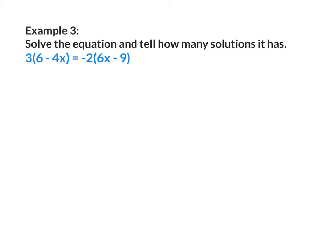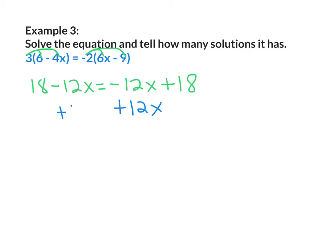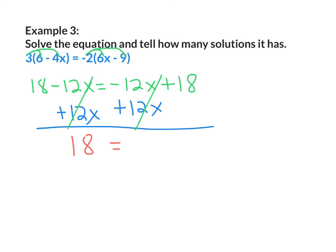Example 3: solve the equation and tell how many solutions it has. Since 3 is on the outside, I'll distribute it to 6 and to negative 4x. I'll also distribute negative 2 to 6x and to negative 9. 3 times 6 is 18; 3 times negative 4x is negative 12x; negative 2 times 6x is negative 12x; negative 2 times negative 9 is positive 18. Moving the negative 12x on the right side to the left by adding 12x to both sides: negative 12x plus 12x cancels on both sides, leaving 18 equals 18. Since 18 equals itself, the answer is infinitely many solutions.